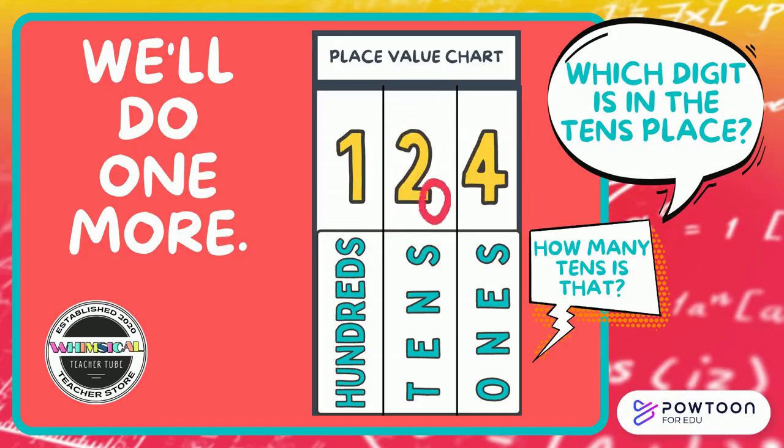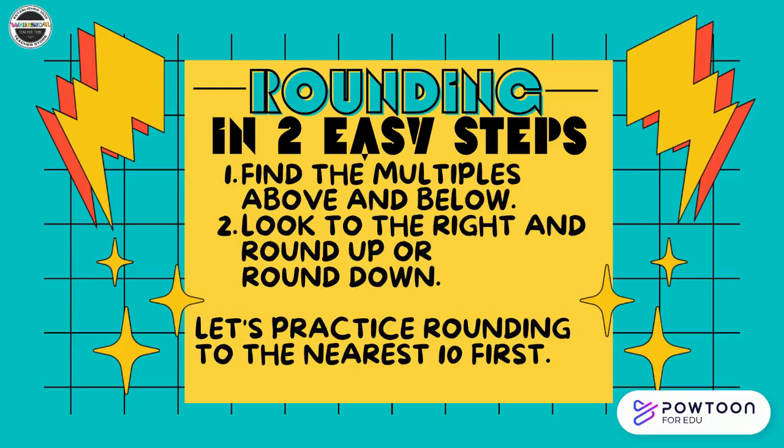Good job. We're going to learn rounding in two easy steps. Step one: find the multiples above and below. Step two: look to the right and round up or round down. Let's practice rounding to the nearest 10 first.